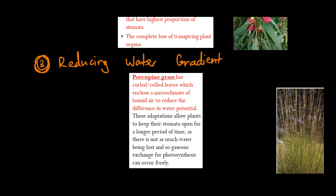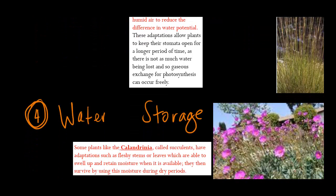And an example of this, an Australian example of course, is porcupine grass, which has coiled or rolled leaves which enclose a microclimate of humid air to reduce the difference in water potential.